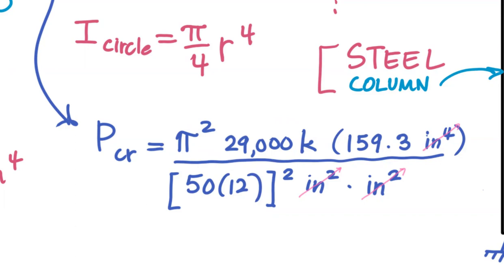And your final answer here to three sig figs is going to be 127 kips or kilopounds of force, axial compressive force.